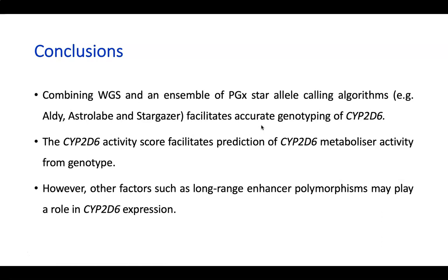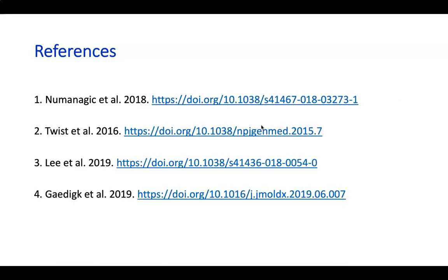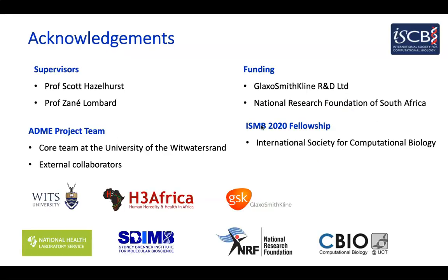In conclusion, combining whole genome sequencing with a combination of pharmacogenomics star allele calling algorithms facilitates accurate genotyping of CYP2D6. The CYP2D6 activity score facilitates the prediction of the metabolizer status of an individual. Additionally, other factors such as long-range enhancer polymorphisms may play a role in CYP2D6 expression.